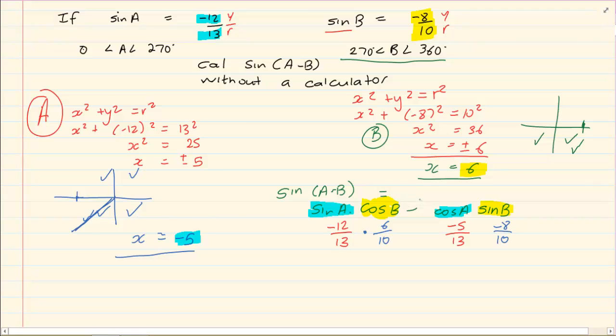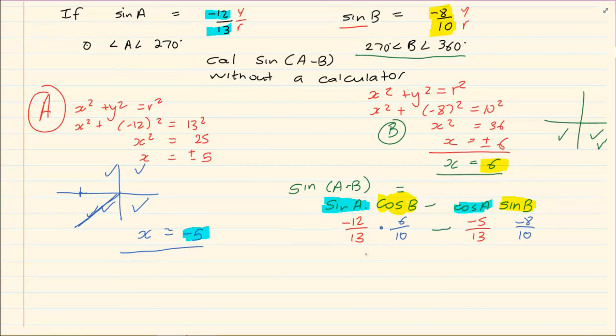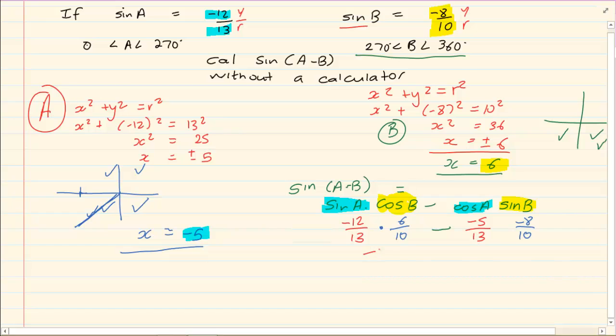Now we still have the negative sign in the middle. From there you can use your calculator. Or you can multiply minus 12 times 6 which is minus 72 over 130.